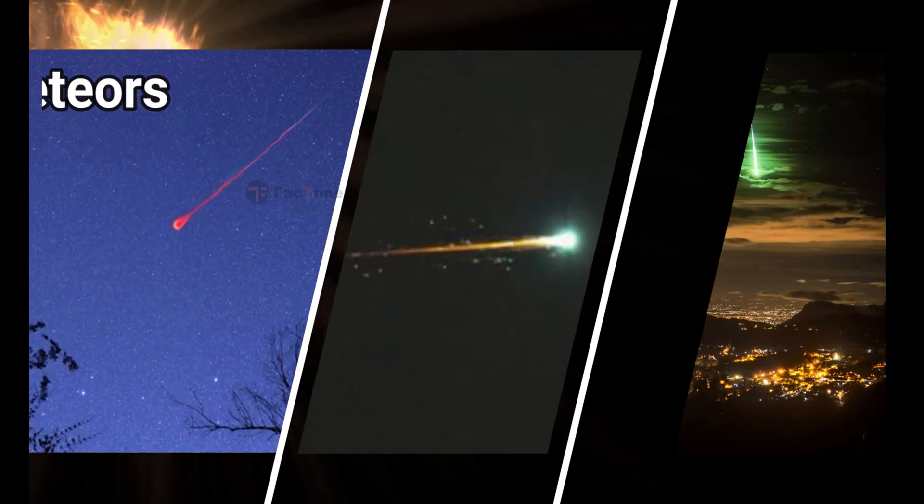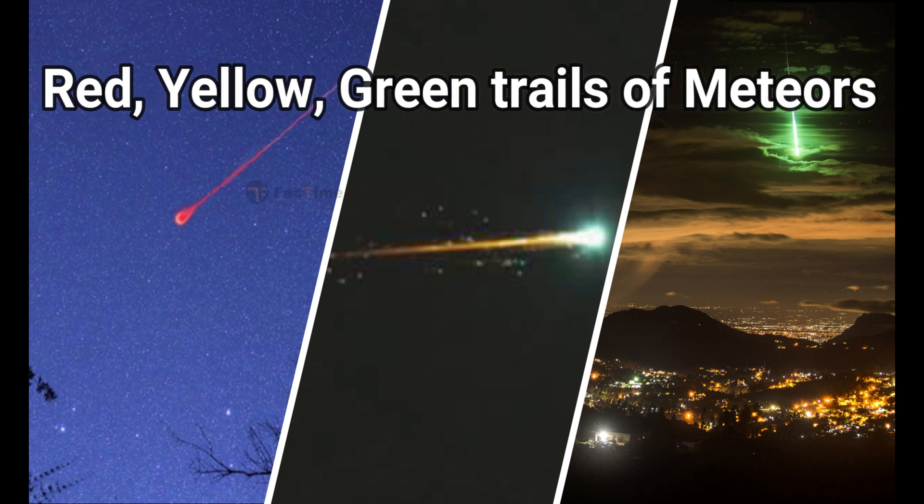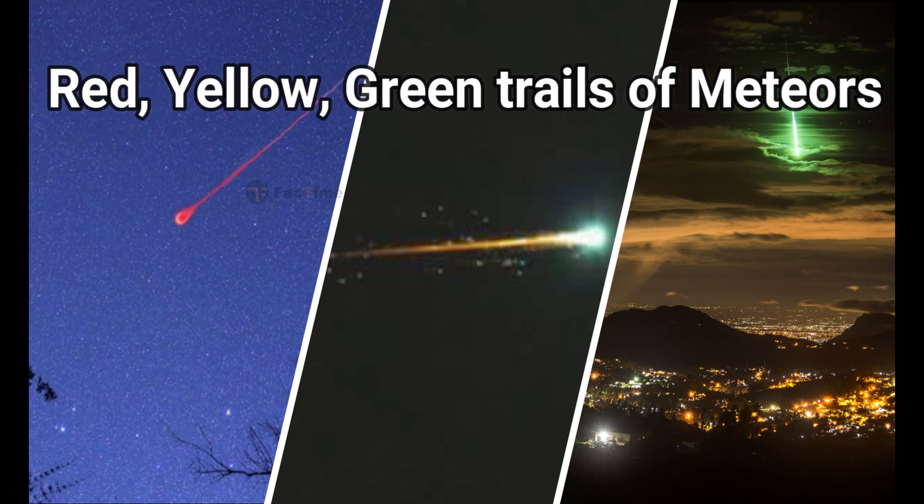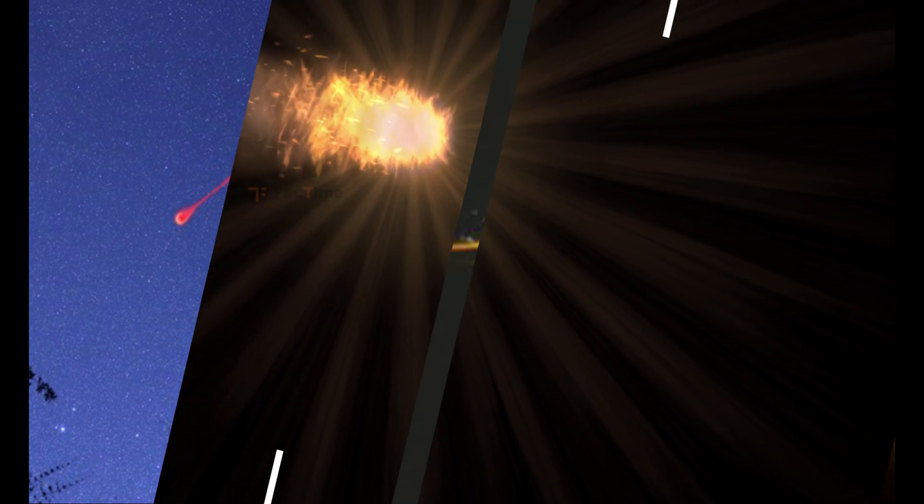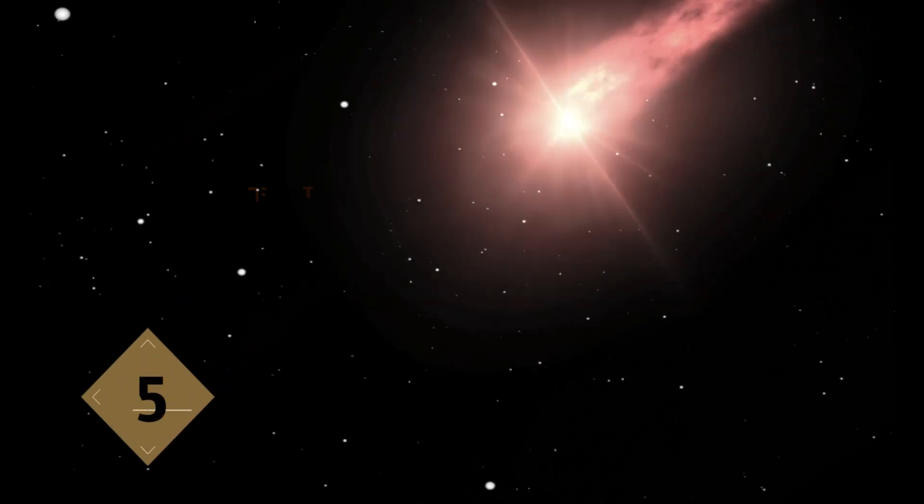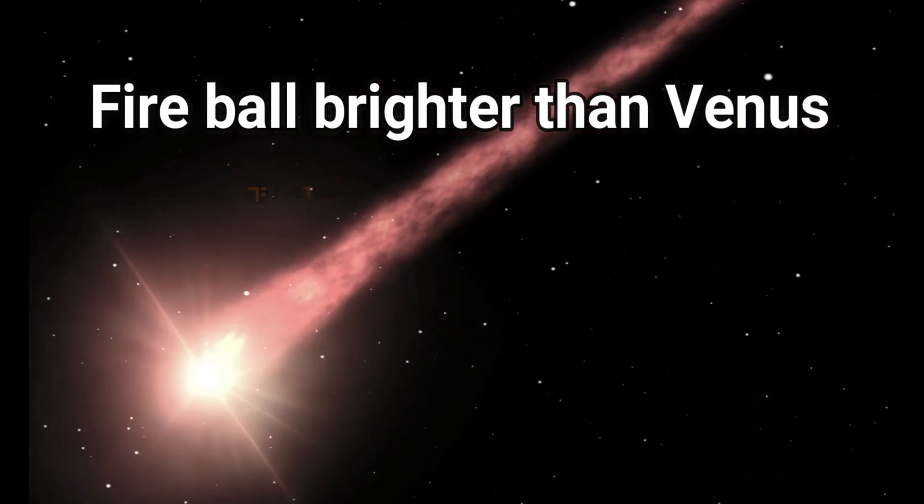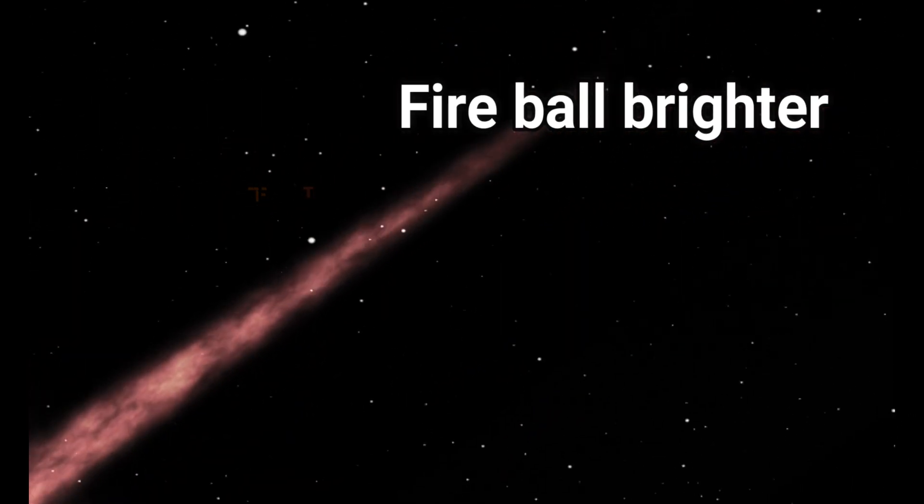Meteors are sometimes observed with red, yellow, or green trails. The colors are caused by the ionization of molecules like oxygen which appears to be green. A fireball is a meteor that is brighter than the planet Venus.